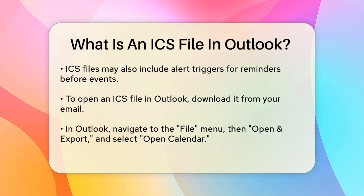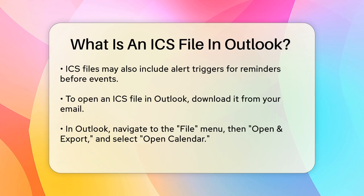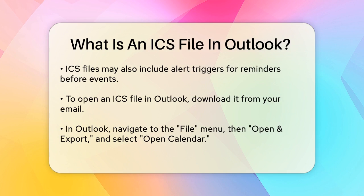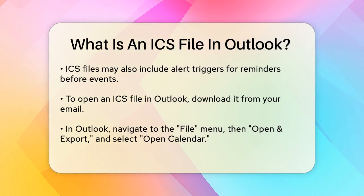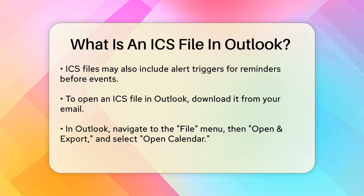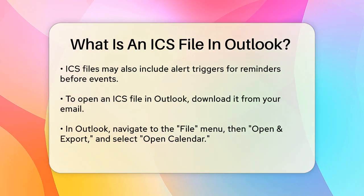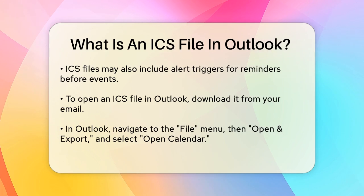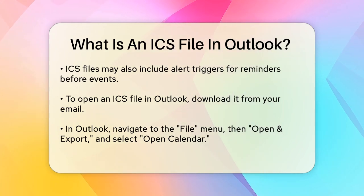To open an ICS file in Outlook, you have a few simple steps to follow. First, download the ICS file from your email. Then open Microsoft Outlook and go to the File menu. Select Open and Export, and then choose the Open Calendar option. You can then search for the ICS file on your computer, select it, and choose whether to open it as a new calendar or import it into an existing one.